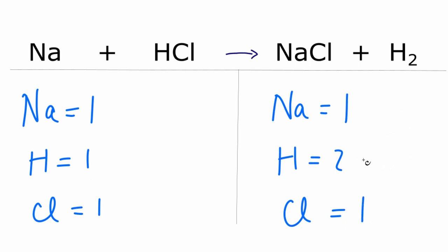It seems that if I want to fix the hydrogens, I need two on this side, I can put a coefficient of two in front of the HCl. So now I have one times the two, that'll give me the two hydrogens, those are balanced.